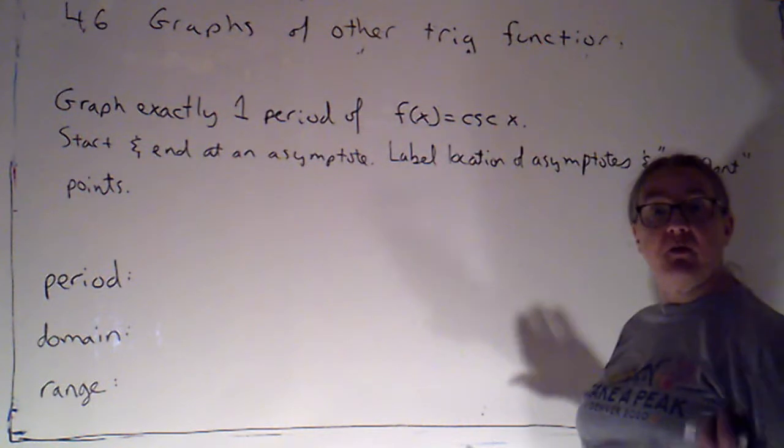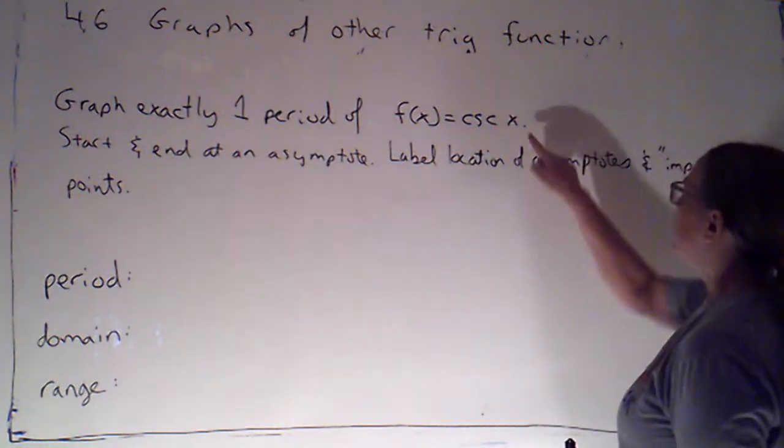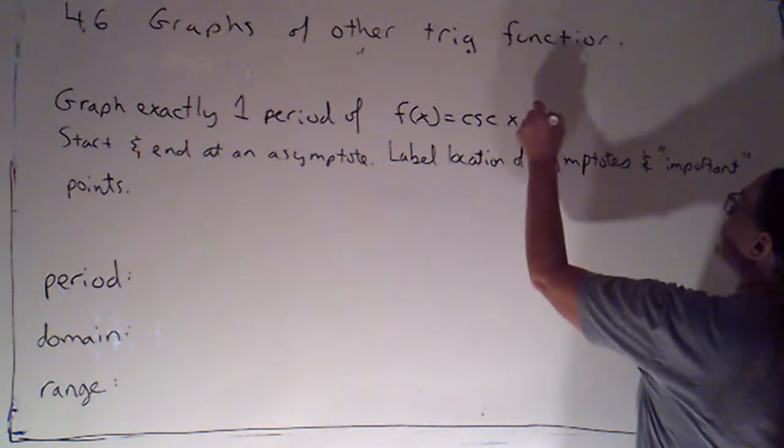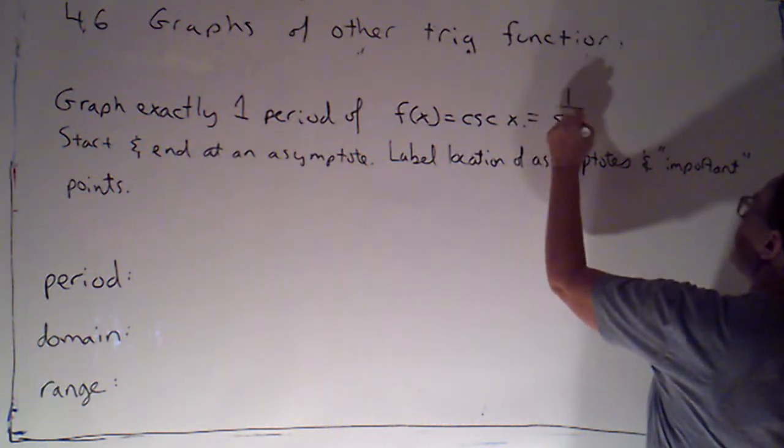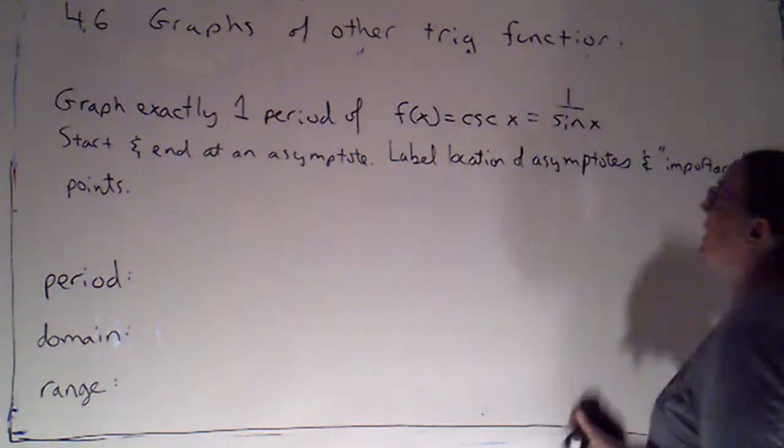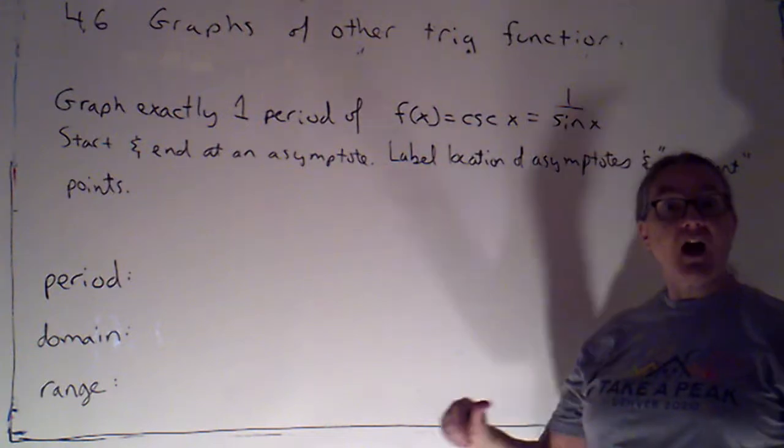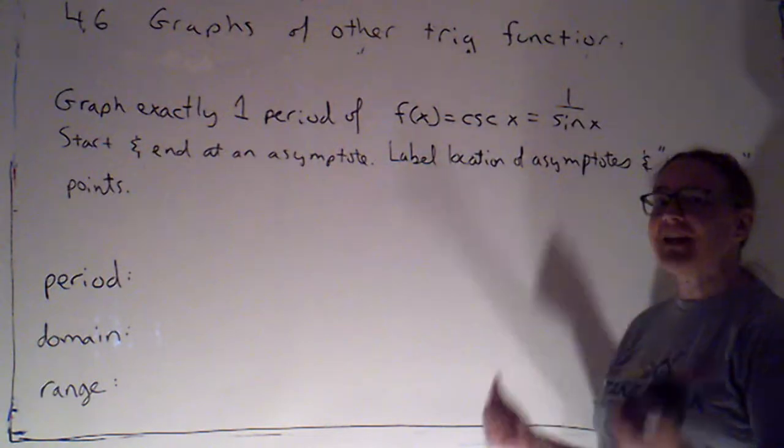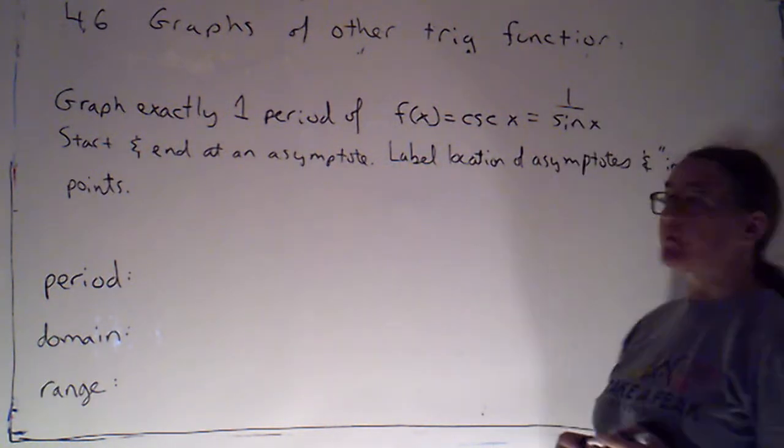You're going to go through the same procedure that we went through for cosine. Cosecant is the reciprocal of sine. So start by graphing sine just as a dotted curve and then use that to graph its reciprocal.